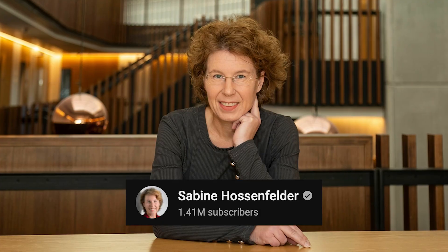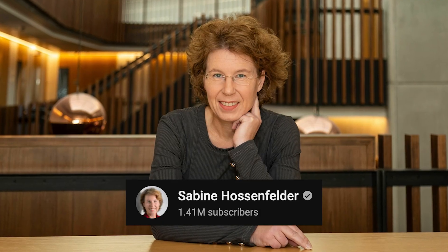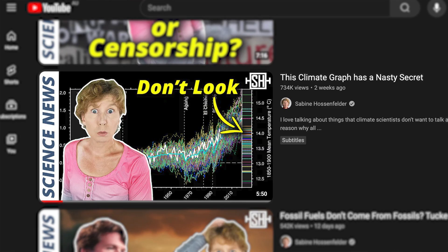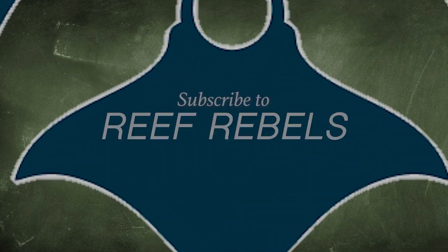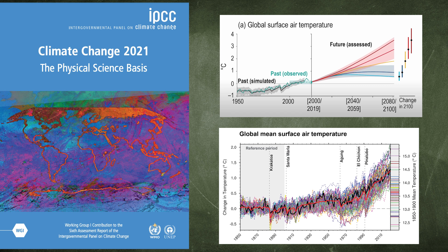Star science YouTuber Sabina Hossenfelder has had a come-to-Jesus moment about climate change — she doesn't quite get there. She got a surprise when she realised that the climate models that predict the Earth's temperature and that it's going to be a catastrophe actually have huge errors calculating the actual absolute temperatures of the Earth.